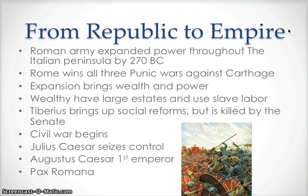They came into contact with the Carthage people on the north coast of Africa. They fought three Punic Wars with the people in Carthage, and the Romans won every time. With these battles, the Romans established themselves as the masters of the western Mediterranean. And they've got a huge empire now, and this huge empire — the sheer size of it — creates problems for the Romans.